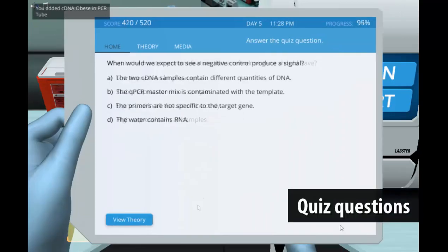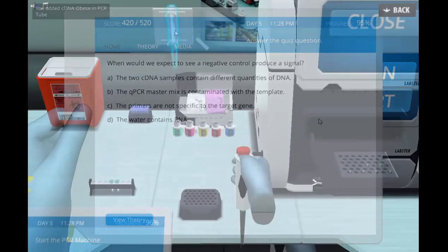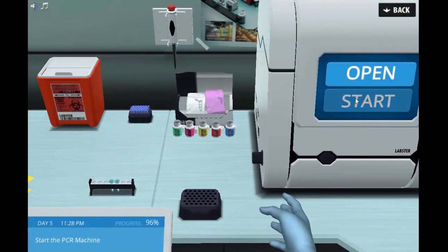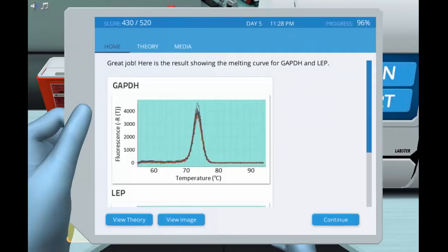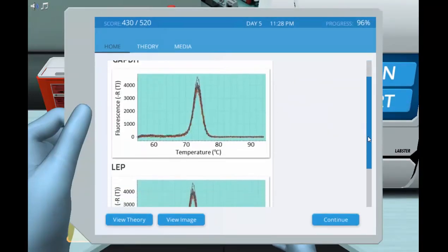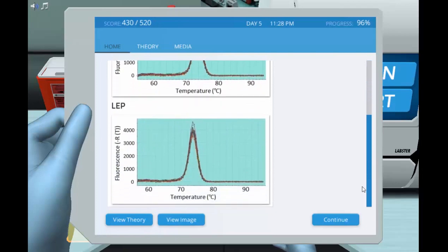Quiz questions will be asked throughout the experimental processes. Students will prepare the qPCR reaction and obtain the melting and standard curves. Would you find a gene responsible for obesity?